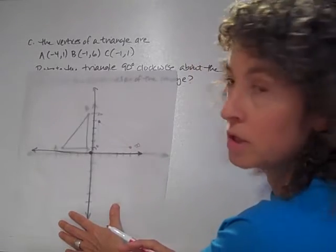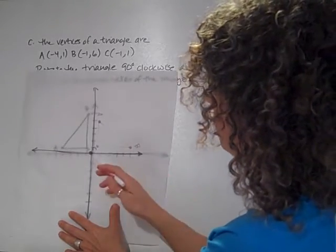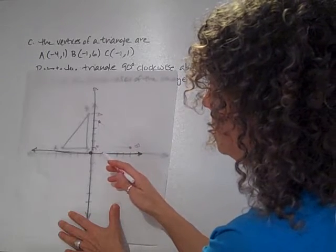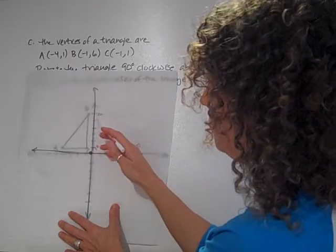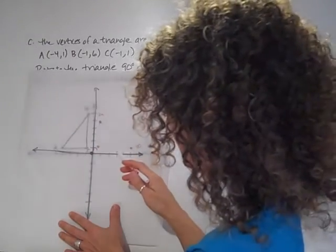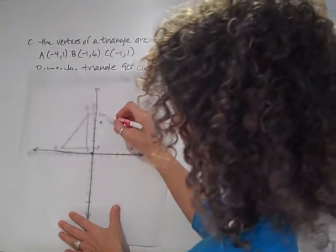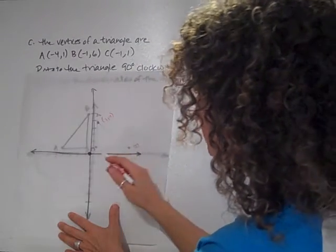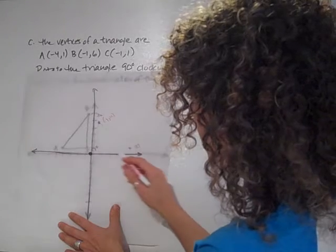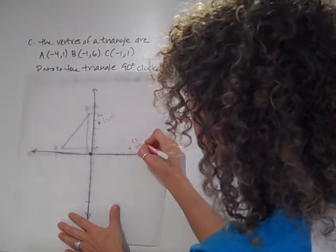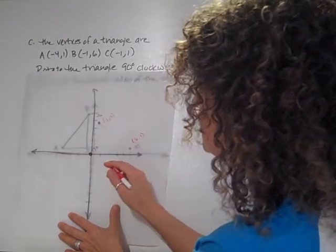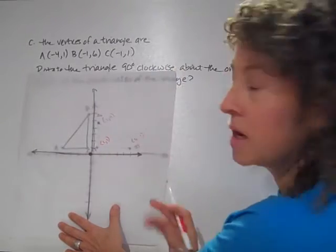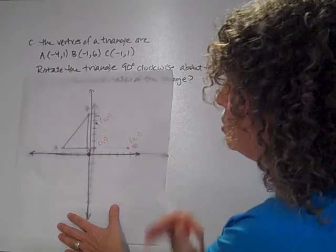So this gives me an idea of what my ordered pairs are going to be also. So I'm going to take a minute here and see what the new ordered pairs are. So from here, A is now going to be at 1, and then 1, 2, 3, 4, 5, no, sorry, my ordered pair is off here. A is going to be at (1,4), so this is going to be at (1,4). B is going to be out here at (6,1). And C is here at (1,1). So that gives me an idea of where my new ordered pairs should be.